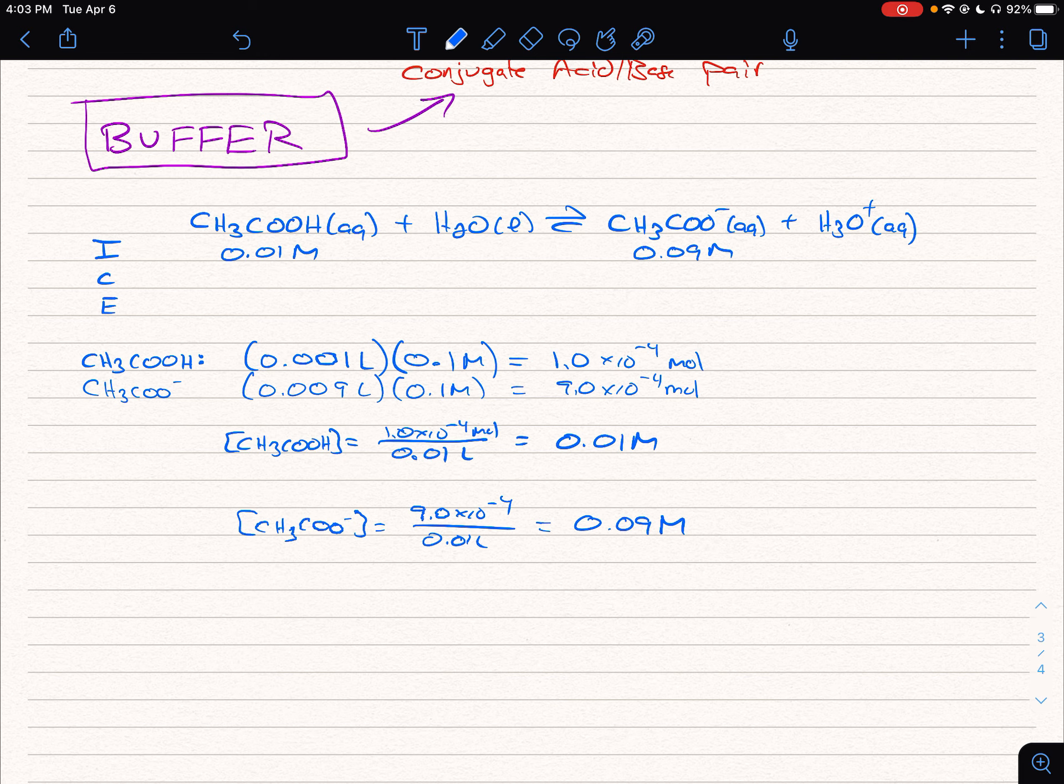At this point, you have two ways of solving this problem. We can continue our ice table. So that would be minus x, plus x, plus x. We have no hydronium. 0.01 minus x, 0.09 plus x and x. And you can continue with our calculations as we've done before. But the other thing to take note is we do know this is a buffer solution.